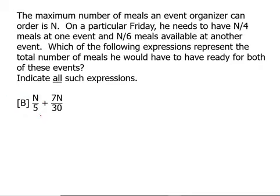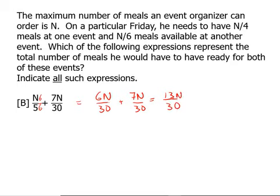Now B. We have denominators of 5 and 30, so 30 would be the least common denominator. The first fraction gets multiplied by 6 over 6, giving us 6n over 30 plus 7n over 30, which equals 13n over 30. That does not simplify and does not equal 5n over 12. These two are close in value but they are not equal, so B is not one of the answers.